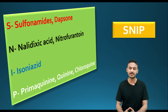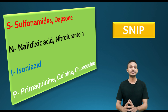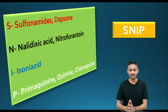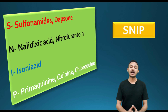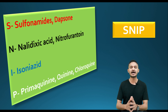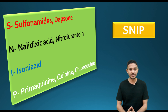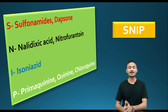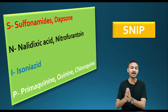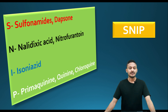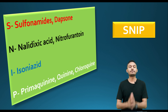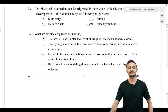The mnemonic is SNIP — S-N-I-P. S stands for sulfonamides and dapsone. N stands for nitrofurantoin and nalidixic acid. I represents INH, that is isoniazid. P represents primaquine, quinine, and chloroquine. These drugs cause hemolytic anemia in G6PD deficiency.